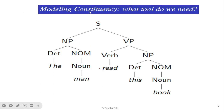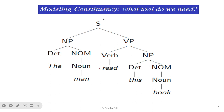For example, take the sentence 'The man read this book.' Internally it is treated as: 'the' is a determiner, 'man' is a nominal (noun). For the object, 'this' is a determiner and 'book' is a noun — together they form an NP. The verb 'read' with the NP forms a VP. NP and VP combine to form the start symbol S, generating the correct sentence. Our aim is to find which category the sentence belongs to and check whether it reaches the final start symbol, using either a top-down or bottom-up approach.